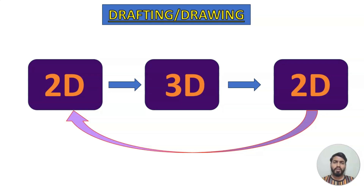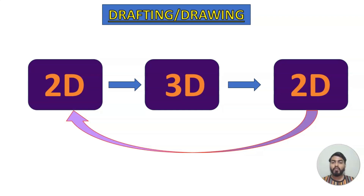So what is the need of drafting or drawing? For example, if we have a 2D drawing of an object, people who have basic engineering drawing knowledge are able to read that drawing and understand what the component is. But unskilled or uneducated people, by just seeing a 2D drawing, will not be able to understand which part is going to be generated from it.